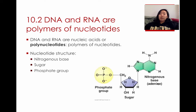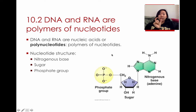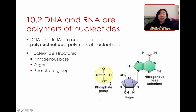As a brief overview of the structure of DNA and RNA: these are polymers called nucleic acids, or polynucleotides — polymers of nucleotides. Nucleotides are the little units that make up all of DNA and RNA. In terms of nucleotide structure, each is made of a phosphate group, a sugar group, and a nitrogenous base.